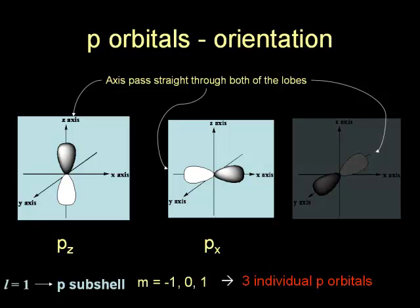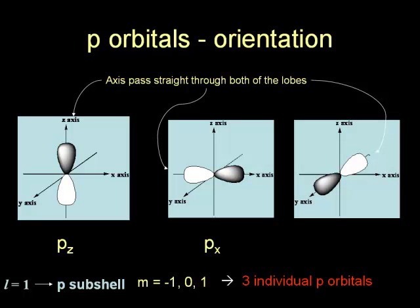And for the one on the right, the Y axis passes straight through both of the lobes. This P orbital is therefore labeled as the PY orbital.